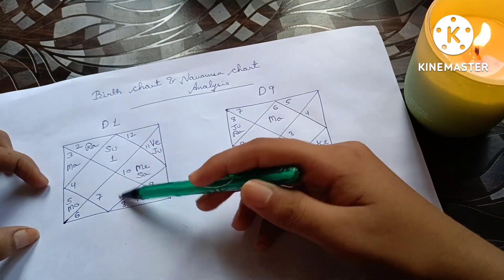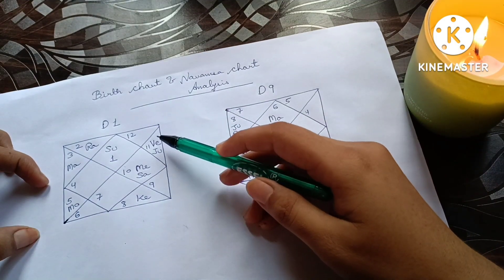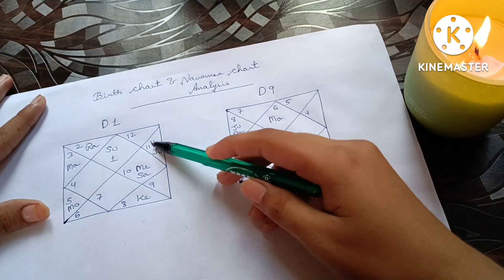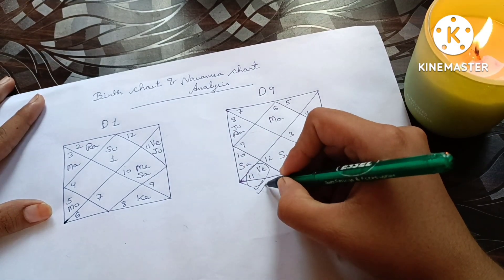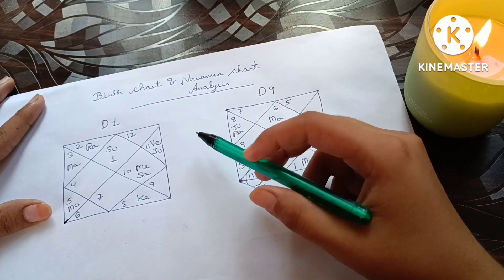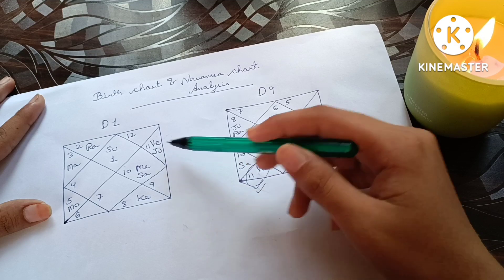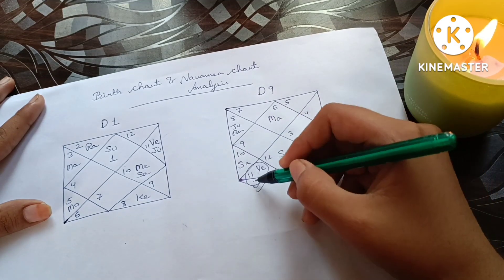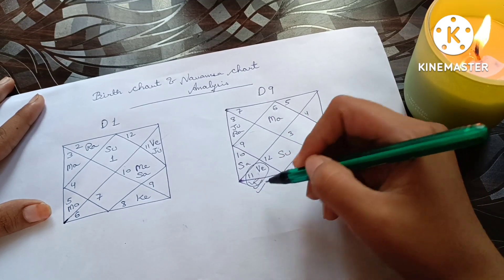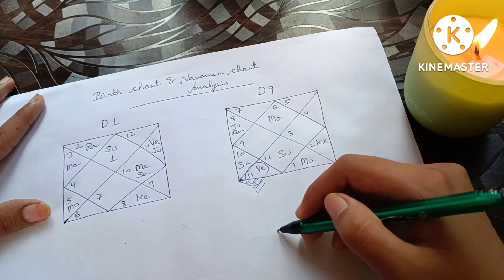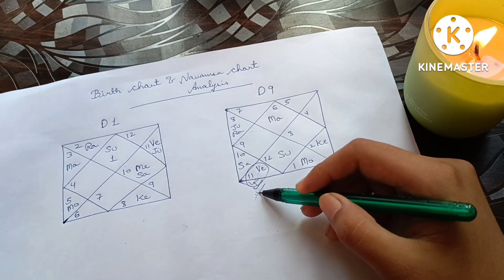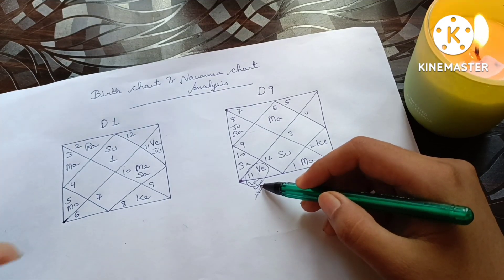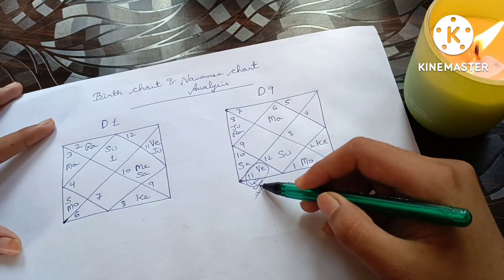In this chart, Venus is placed in the 11th house, creating a Dhana yoga. But in the Navamsha, Venus is placed in the 6th house, which shows that when the dasha of Venus comes, the native will face issues — health problems, relationship problems, and family issues can all occur during the Venus dasha or antardasha.